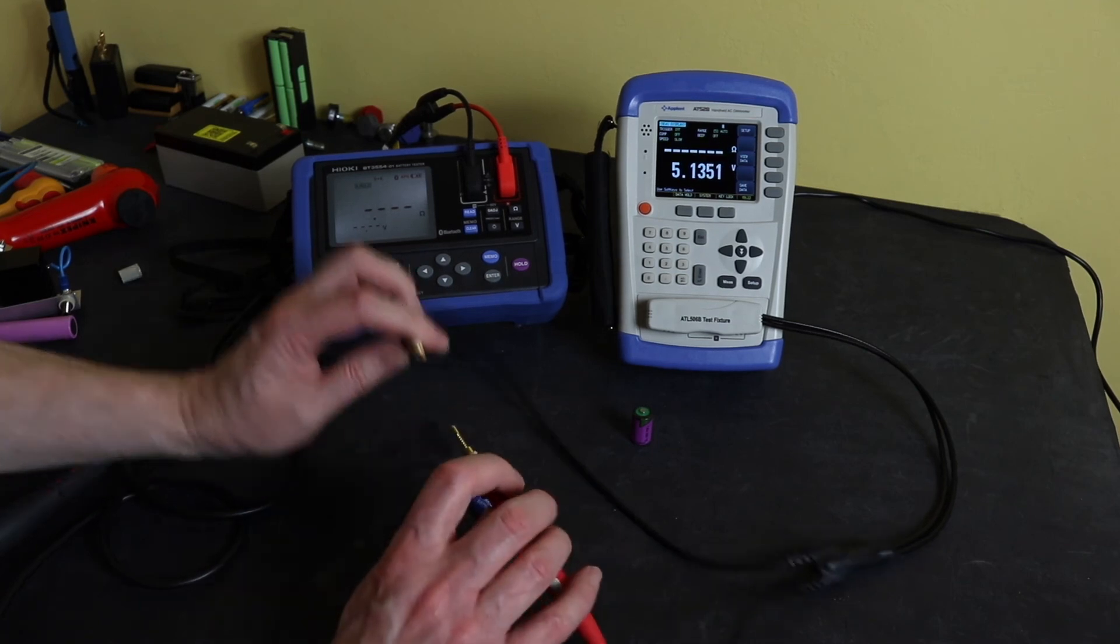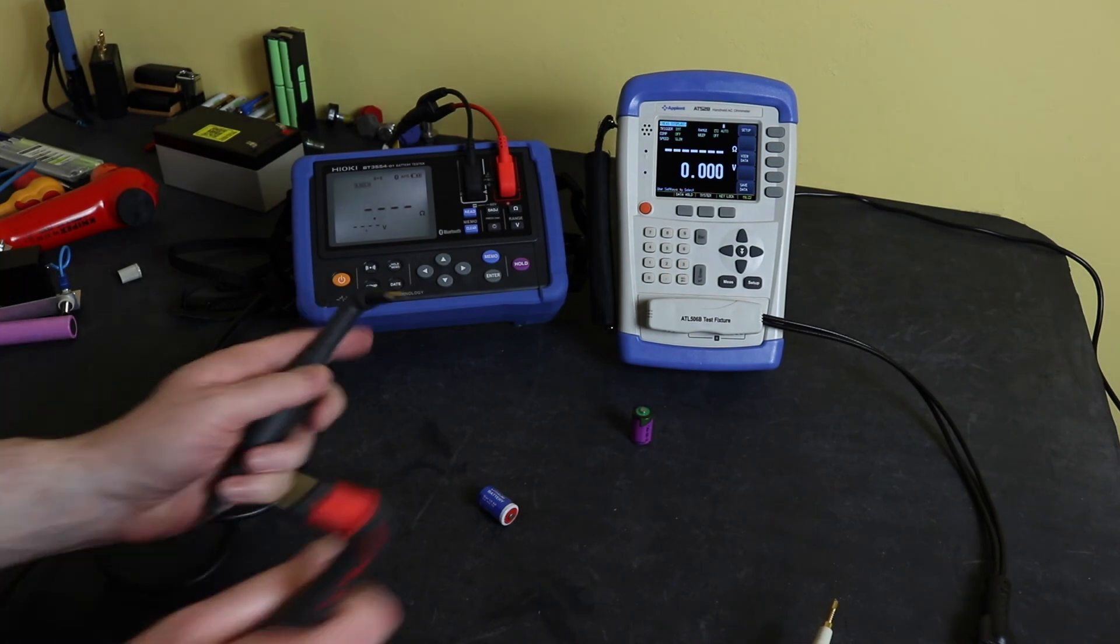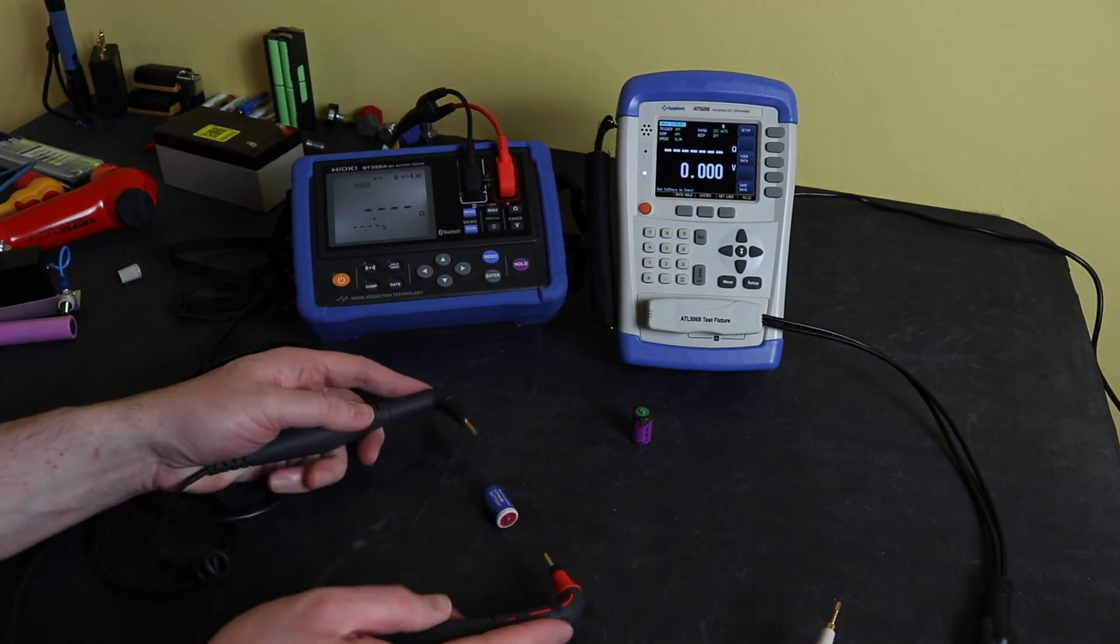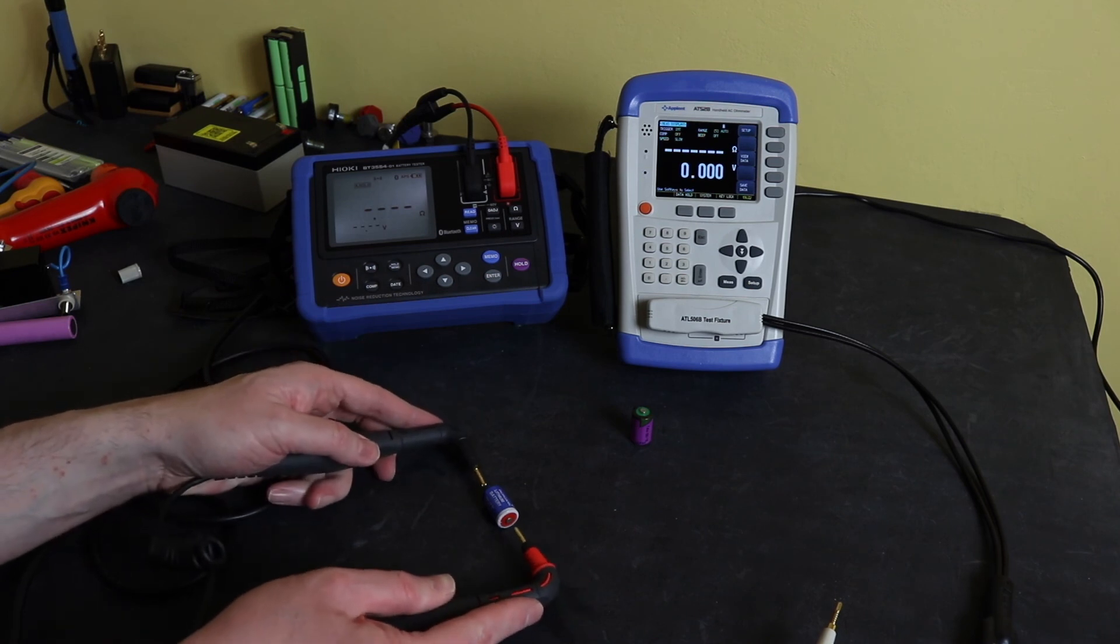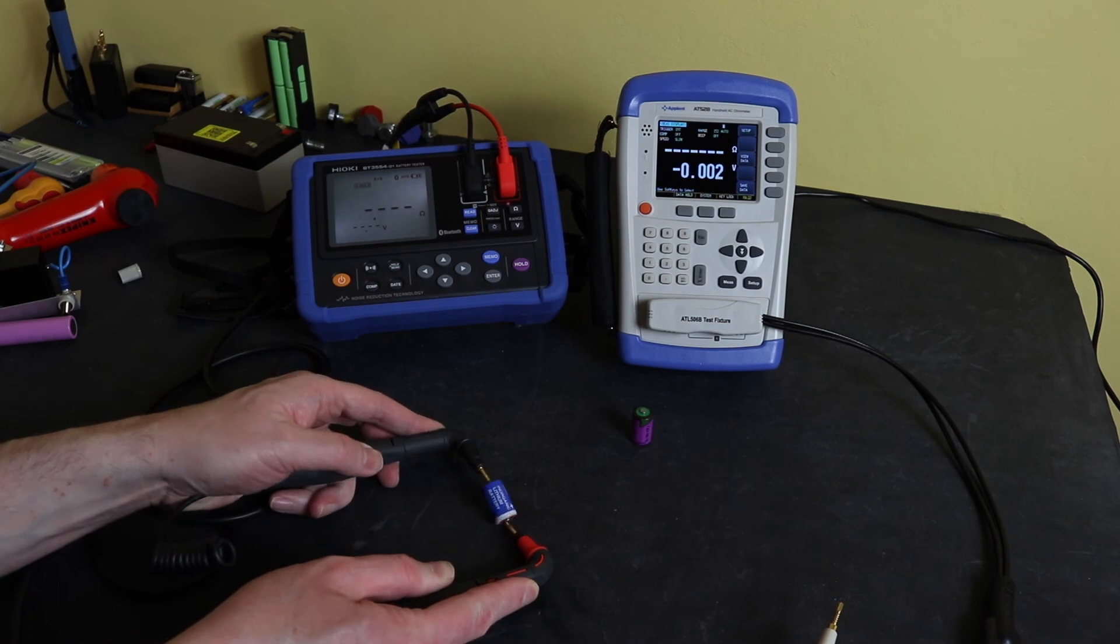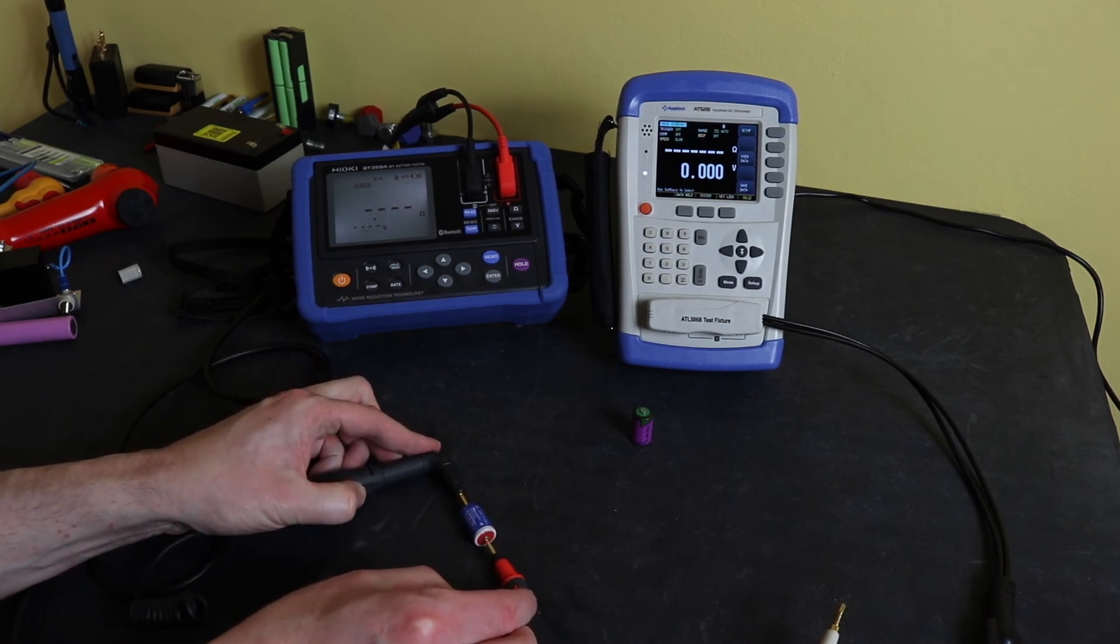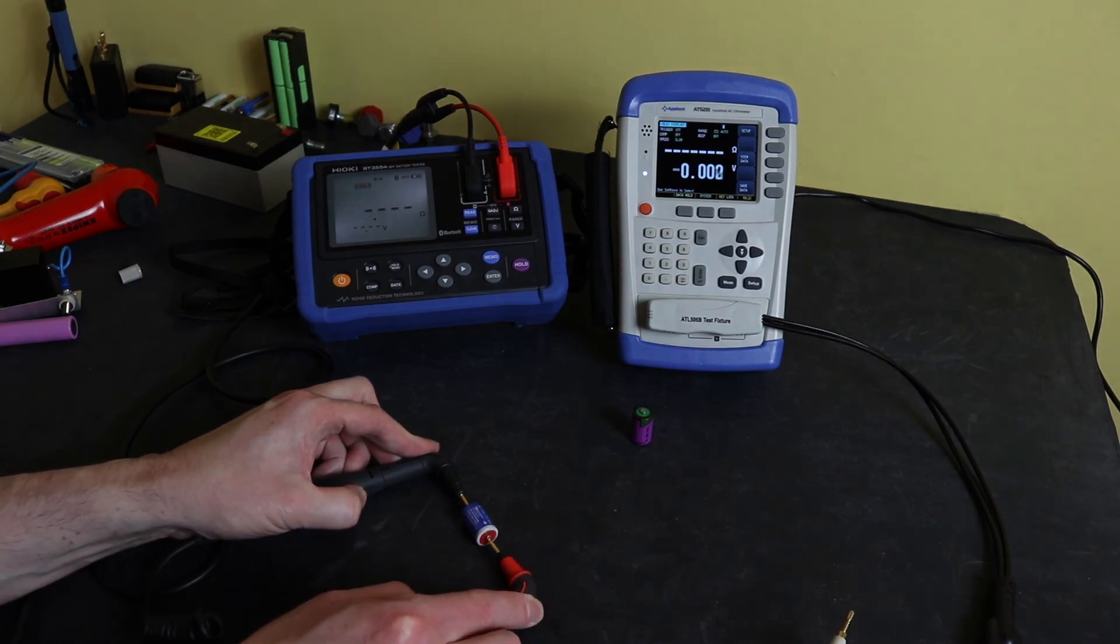So this one's defunct, which after coming on 16 years you'd expect it to be I guess. Let's try and measure it with the Hioki and let's just see. Interesting, it didn't save the reading last time did it? Won't give me a reading at all. 3.69.